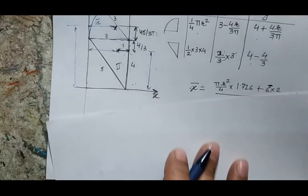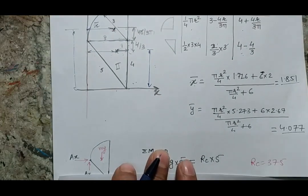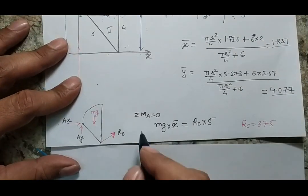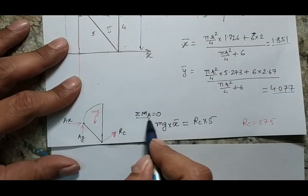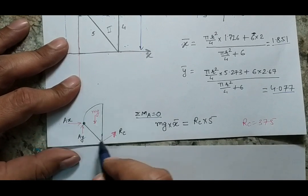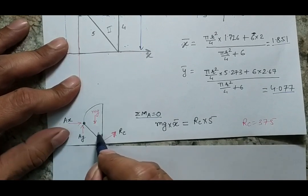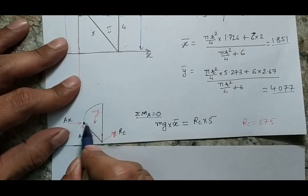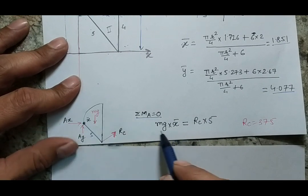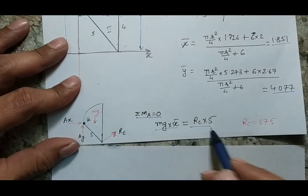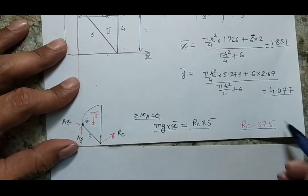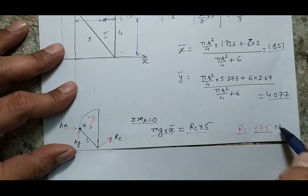Writing the moment equation at point A: RC is multiplied by the distance 5, and mg is multiplied by the distance x_bar. With mg = 1 kN and x_bar = 1.851, putting in these two values gives RC = 375 Newton.